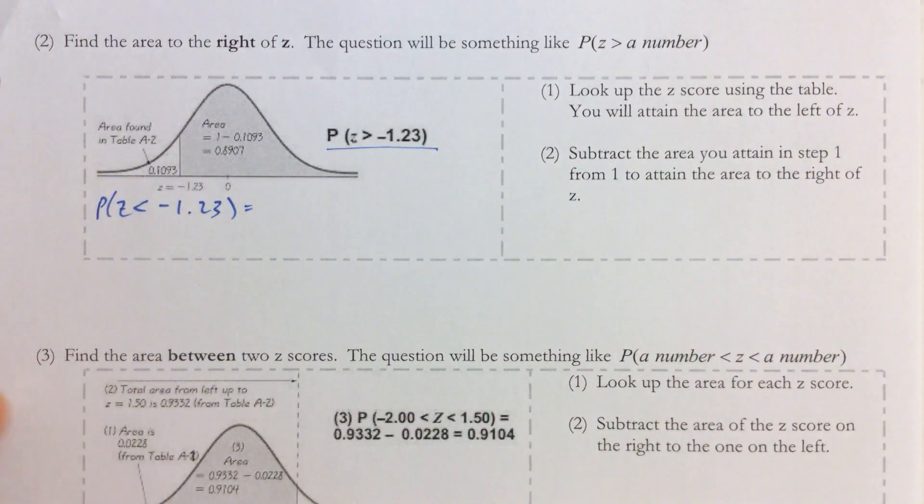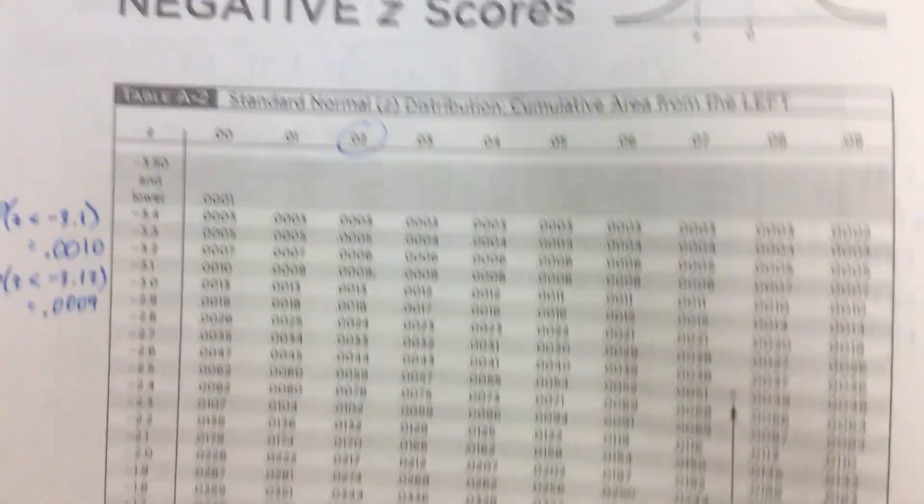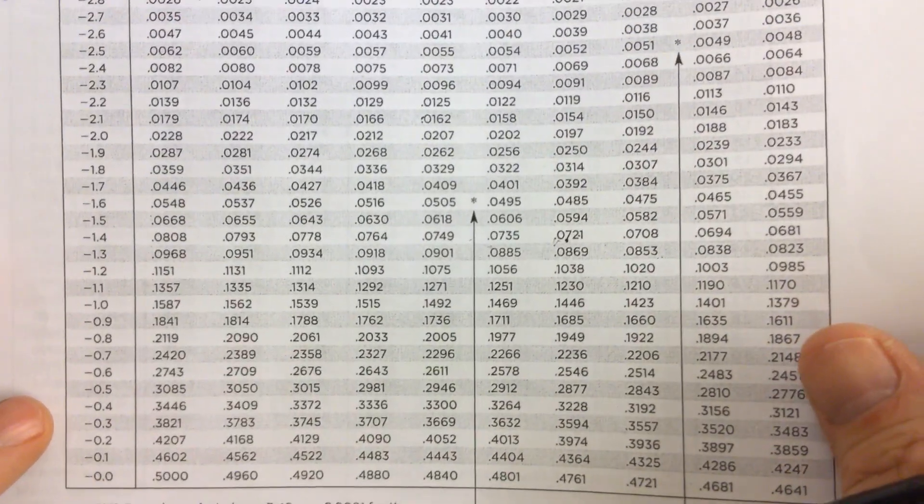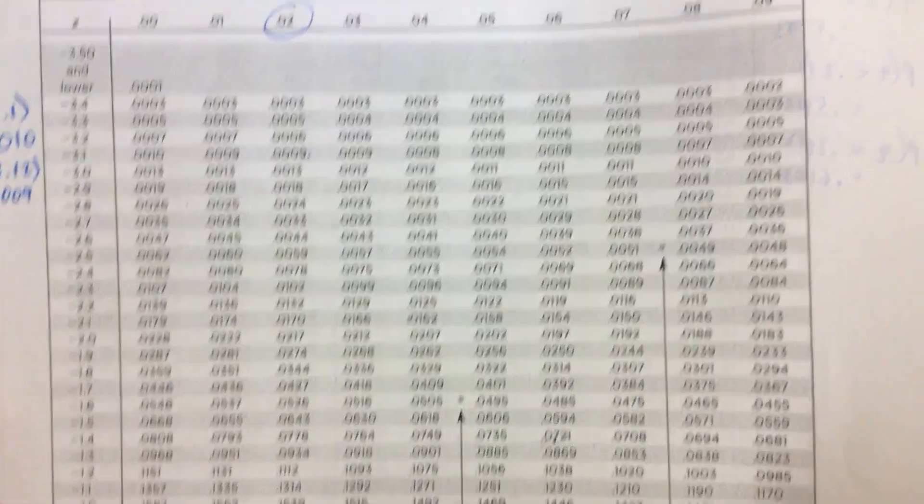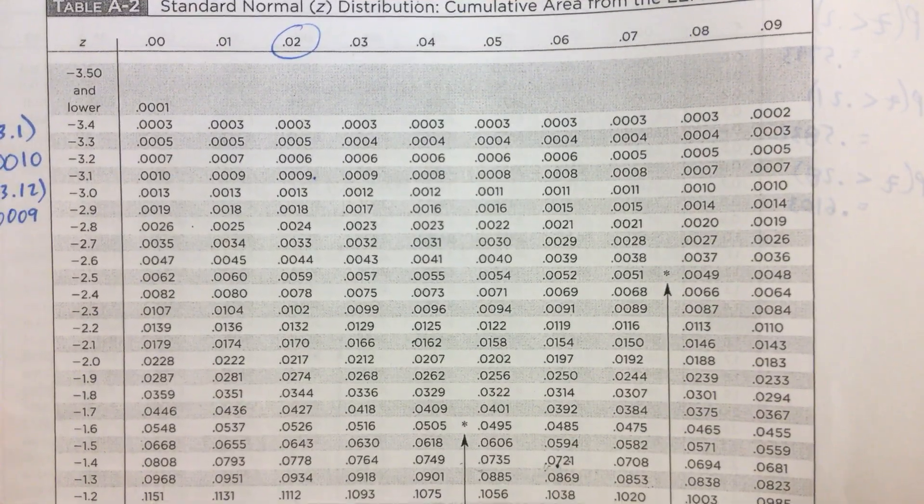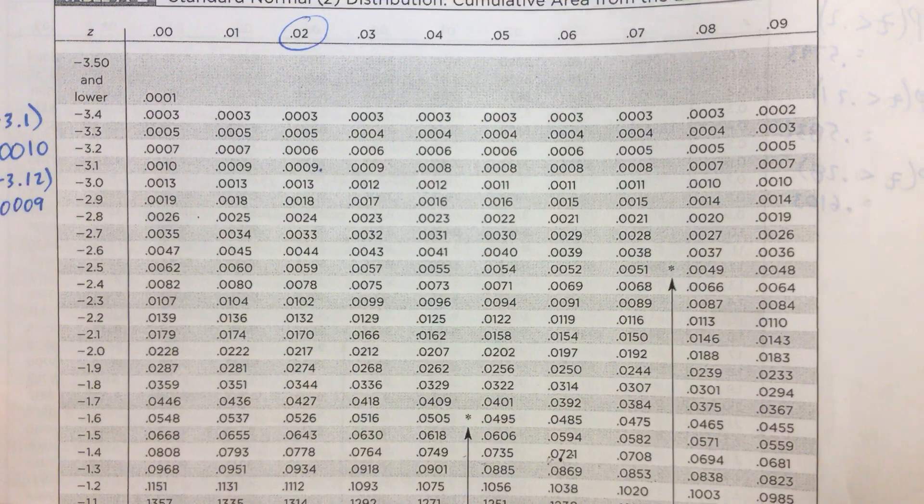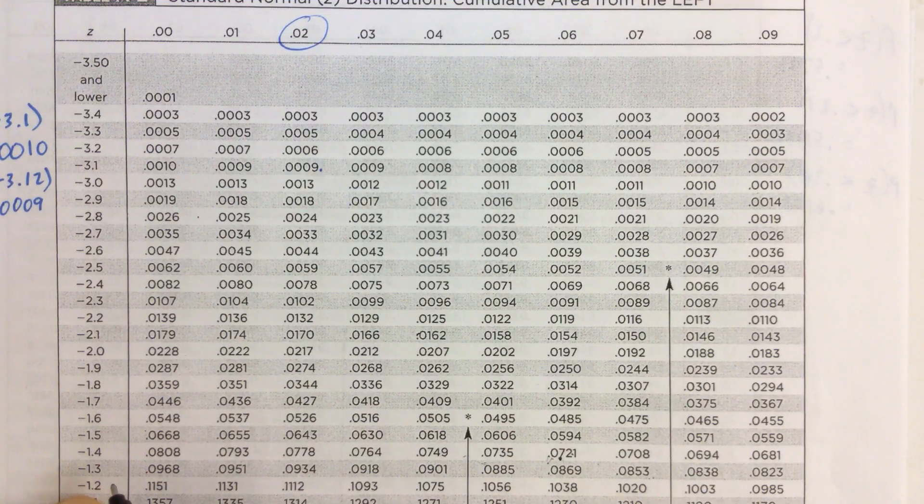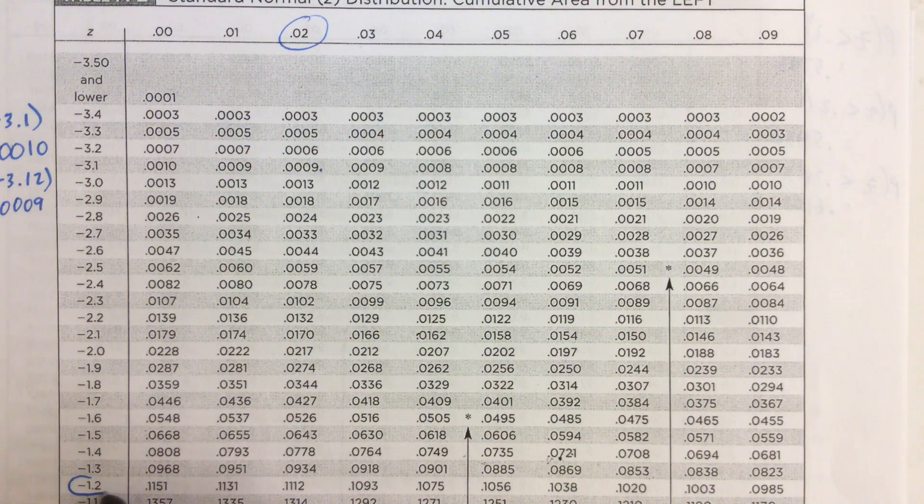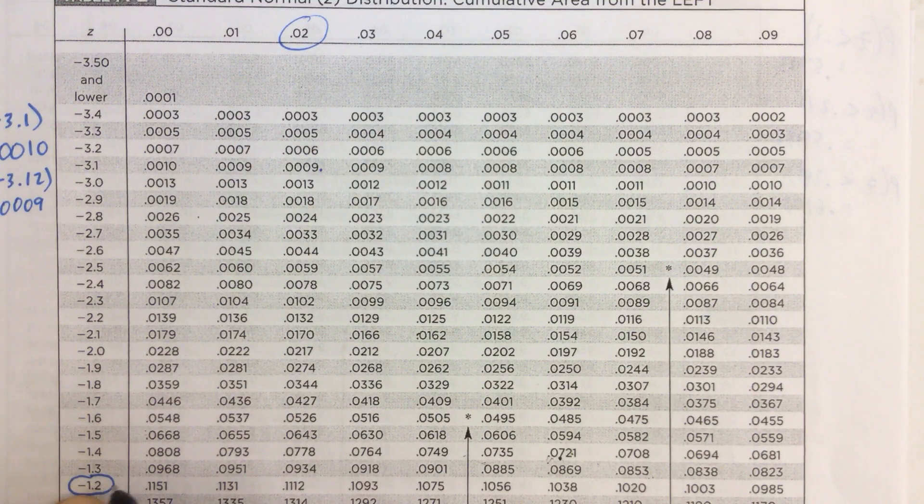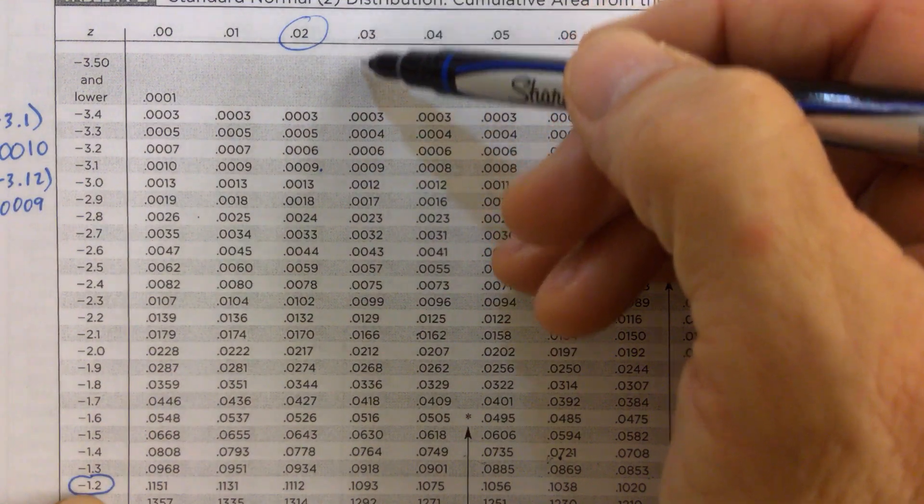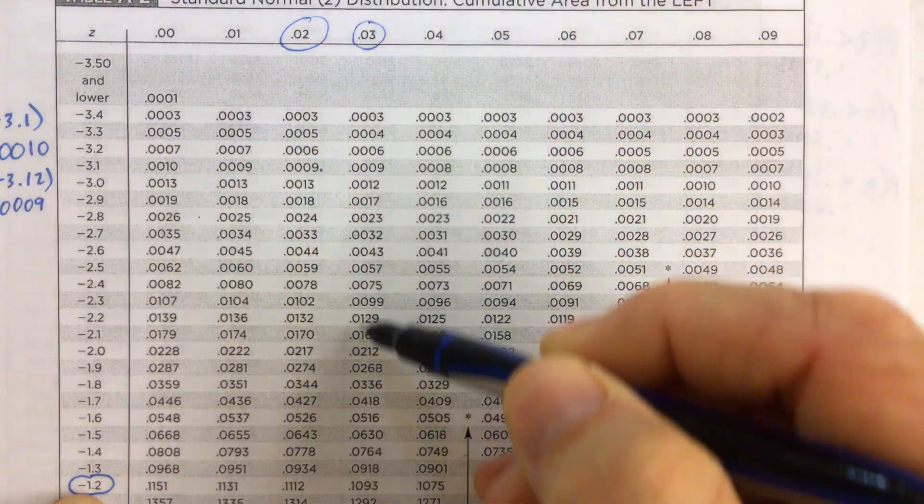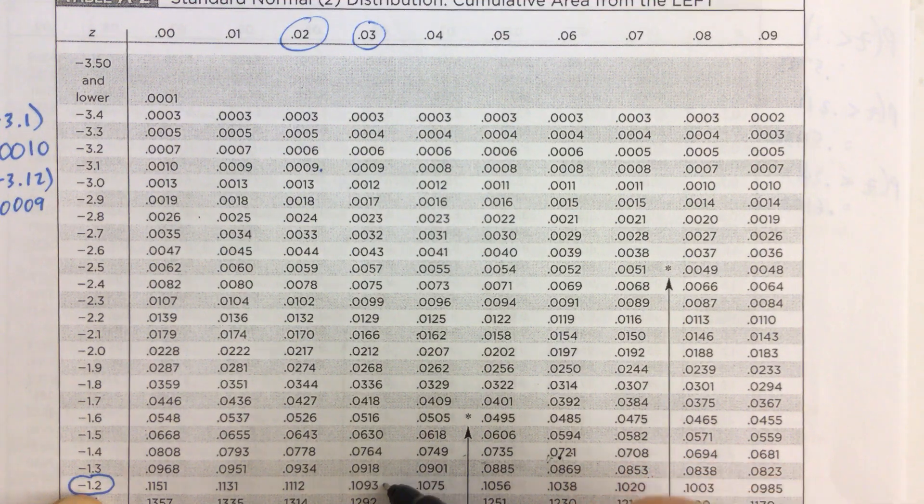So we're going to find the area to the left of negative 1.23. If we look up negative 1.2, right there is negative 1.2, and then we want to find 0.03 is right up here, and we go all the way down to this point right here,